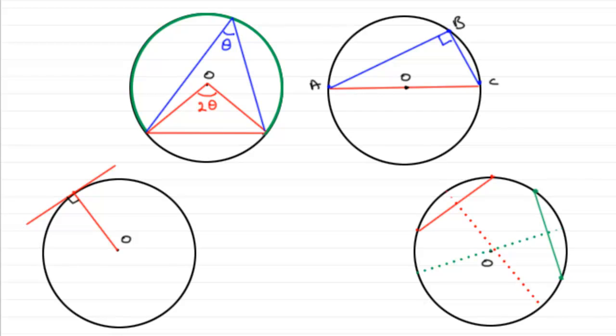OK, so I hope that's given you some idea of some of these common properties that you might well need to call upon when you're dealing with coordinate geometry for circles. OK? Thank you.